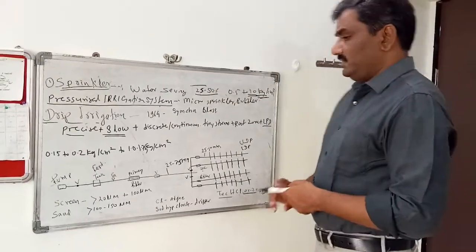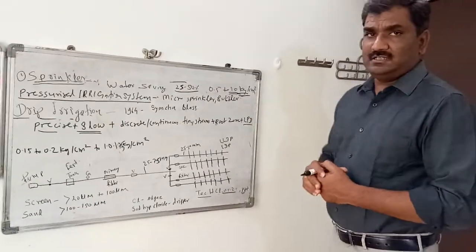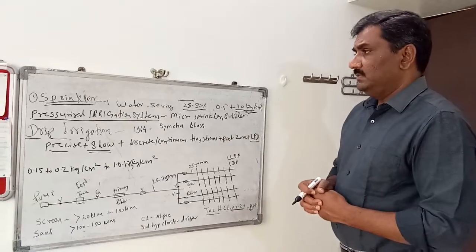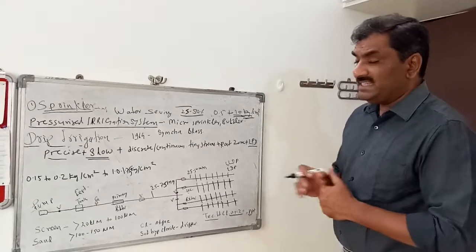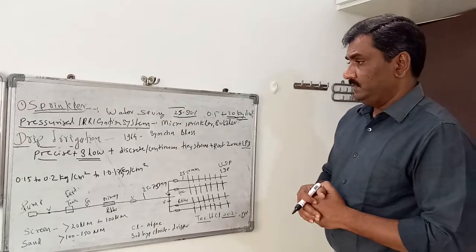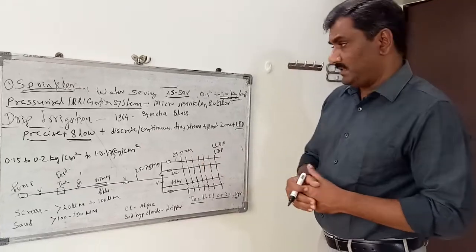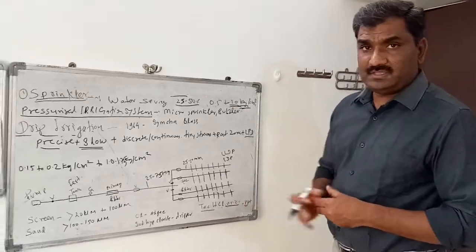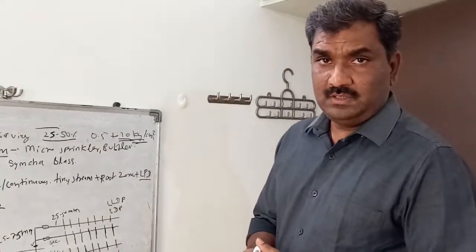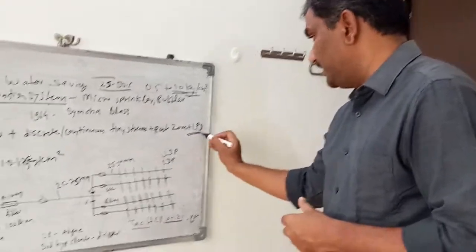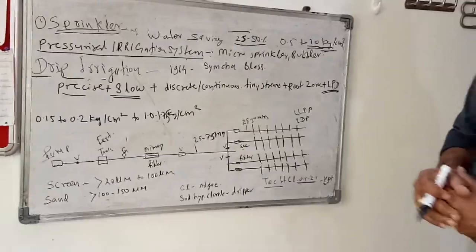Next are pressurized irrigation methods. To understand this system, we have to understand 4 or 5 key points. Pressurized irrigation systems are those which have precise and slow application of water for a long period of time, with discrete or continuous tiny streams applied in the root zone, and with a low pressure delivery system. These 4 points are very important to increase the efficiency of the irrigation system.